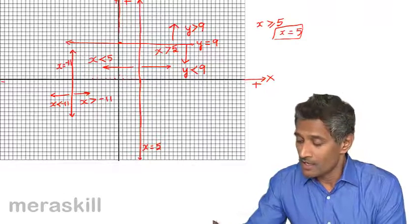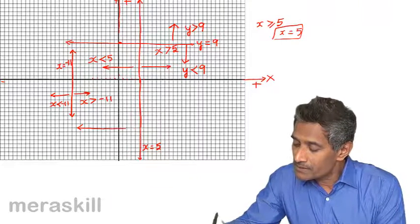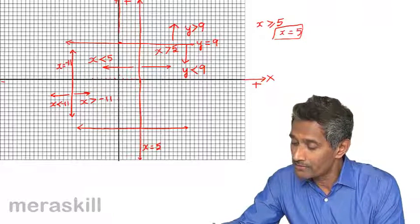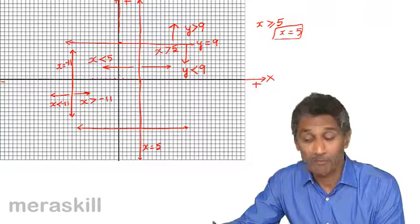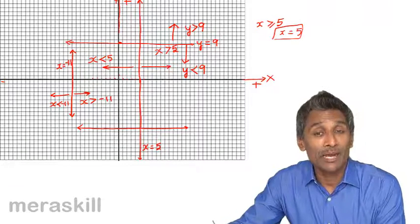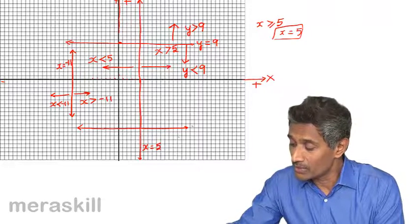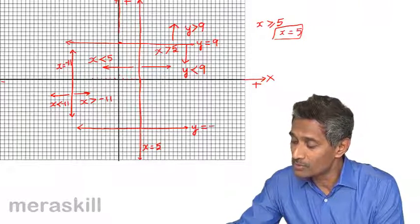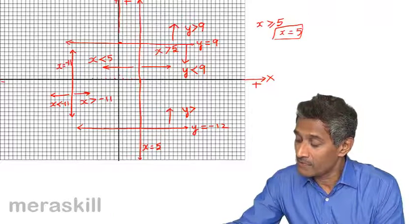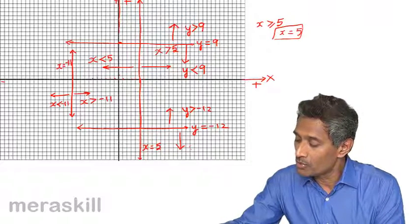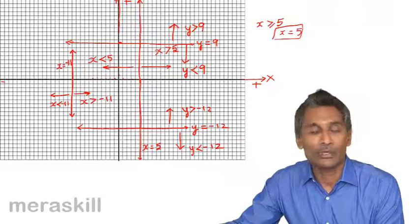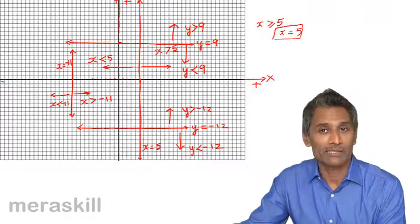Let's take another example: a horizontal line below the origin. Counting down 1, 2, 3, 4, 5, 6, 7, 8, 9, 10, 11, 12 — since this is below the origin, all points on this line have y-coordinate as minus 12. So the equation of this line is y equals minus 12. The region above it is y greater than minus 12, and the region below is y less than minus 12. Including the line gives y greater than or equal to, or less than or equal to, minus 12.